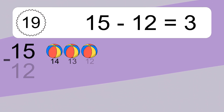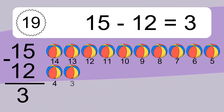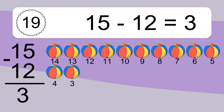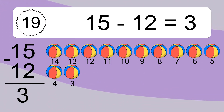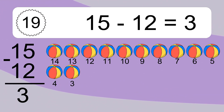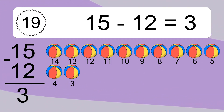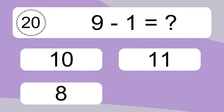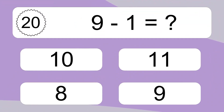15 minus 12 equals what? 15 minus 12 equals 3. Let's count it: 14, 13, 12, 11, 10, 9, 8, 7, 6, 5, 4, 3.